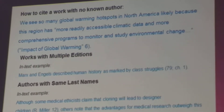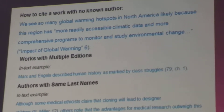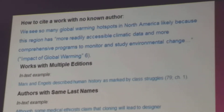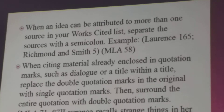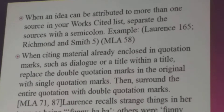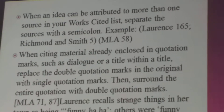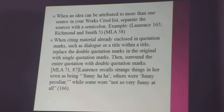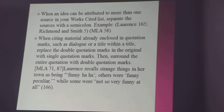We have seen how to work with no known author, and how to handle authors with the same last name. When an idea can be attributed to more than one source, in your works cited list separate the sources with a semicolon, as we have seen.